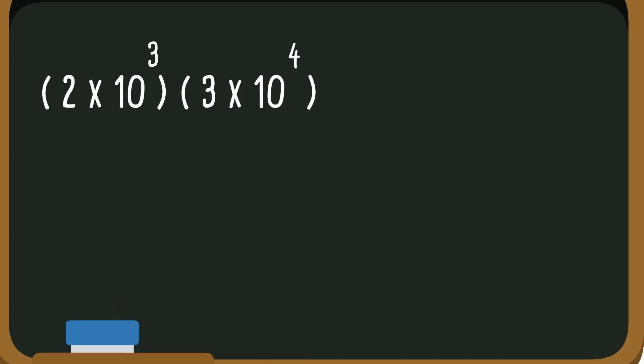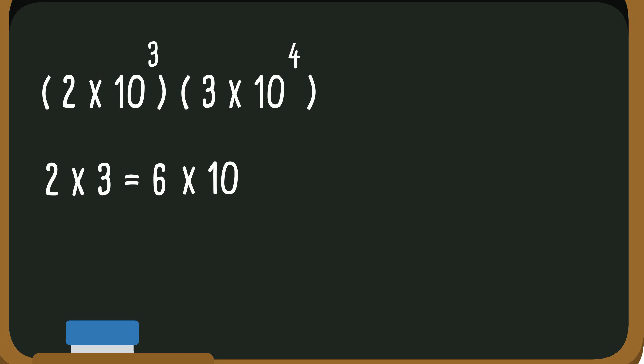Now let's work this first problem. We're going to multiply the coefficients, so it's 2 times 3 equals 6. We're going to keep the times 10, and we're going to add the exponents: 3 plus 4 equals 7, so the exponent is 7. Then we're going to look at the coefficient, and it is indeed between 1 and 10. So the first answer is 6 times 10 to the 7th.